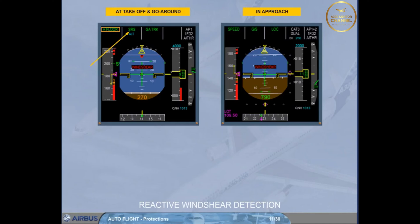which commands a pitch in approach, ensuring a minimum positive rate of climb despite a potential speed drop. In approach, with the ground speed mini function, the managed speed target in approach is automatically adjusted with wind variations, so as to ensure that the aircraft ground speed does not drop below a minimum value.